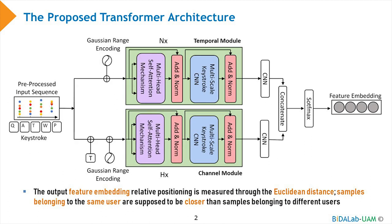The considered deep learning architecture is based on a transformer. Transformers were first proposed in 2017 and are based on an encoder-decoder architecture. This slide provides a graphical representation of the proposed transformer, based on an adaptation of the encoder part of the vanilla transformer, which was the first proposed transformer developed for natural language processing. The vanilla transformer showed impressive results but needed some adaptations to be used for time sequences. The pre-processed keystroke input sequence is introduced into the transformer model and encoded by a Gaussian range encoding block to provide a representation of the locations of each entity in the sequence.